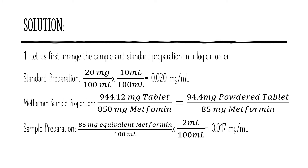For the sample preparation, 94.4 milligrams of powder is equivalent to 85 milligrams metformin. Dissolving this in 100 ml water will give its initial concentration as 0.85 milligrams per ml. A second dilution is then performed which reduces the concentration by 2 over 100, giving a final concentration of the sample as 0.017 milligrams per ml.